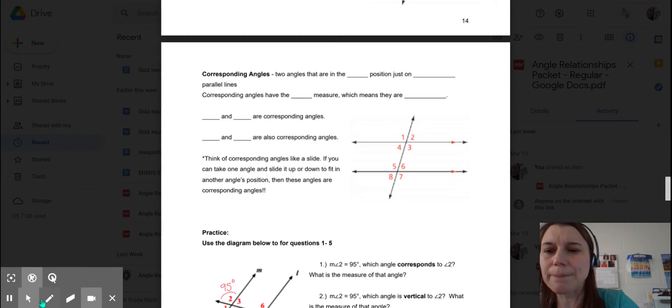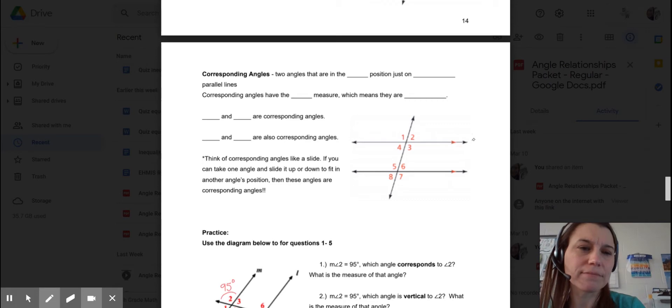We're going to focus on these parallel lines here. I'm going to name this line J and line K. So these two parallel lines are cut by this transversal A.